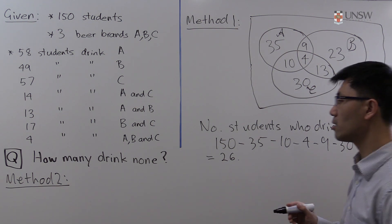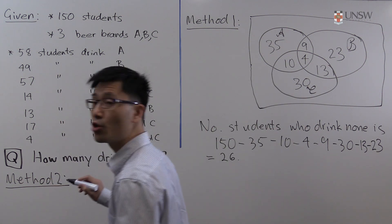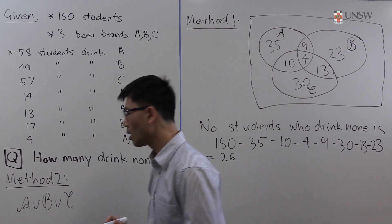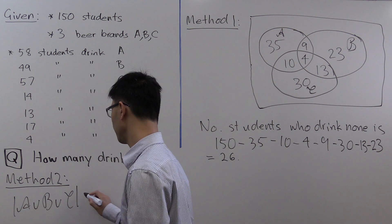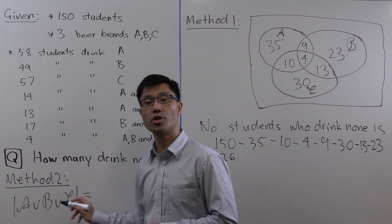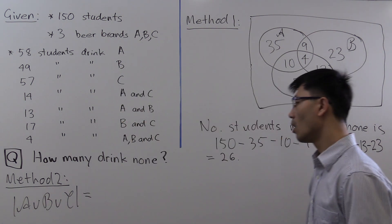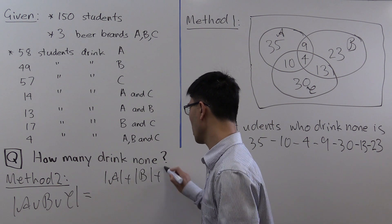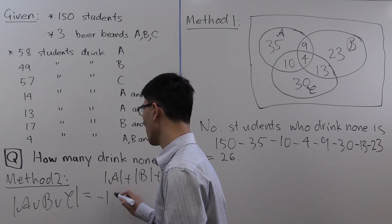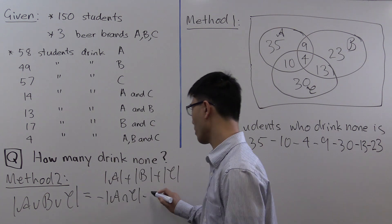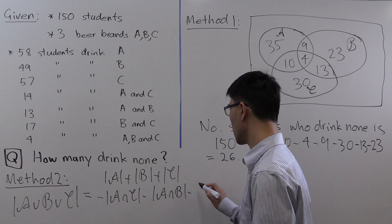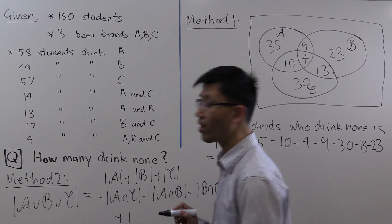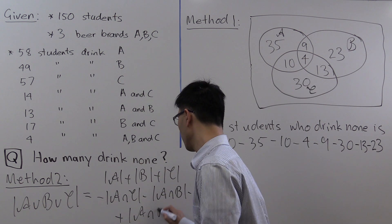The formula works as follows. Suppose we look at the union of the three sets: A union B union C. The number of elements in that union equals |A| + |B| + |C|, minus |A ∩ C|, minus |A ∩ B|, minus |B ∩ C|, plus |A ∩ B ∩ C|.